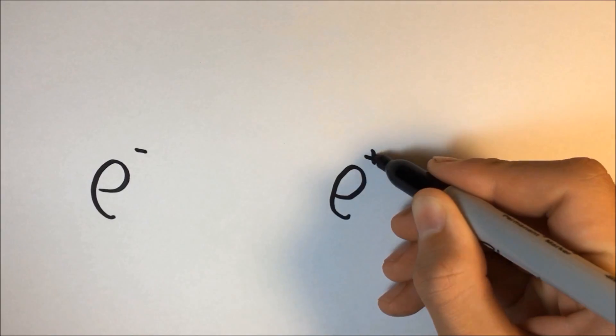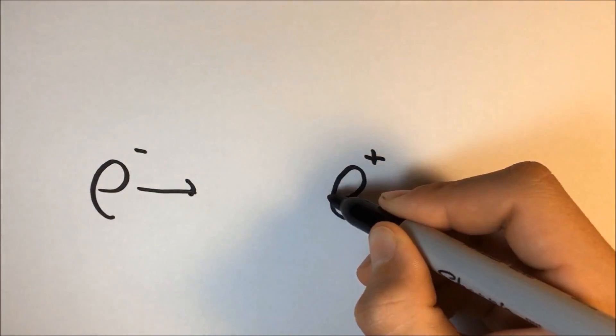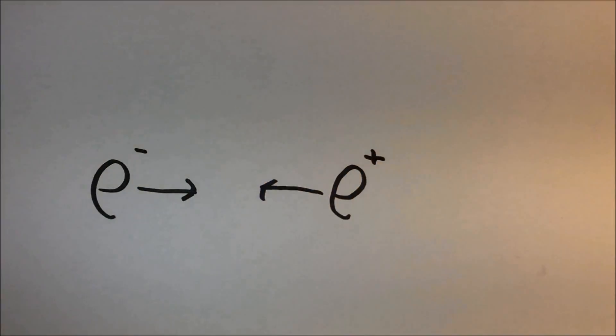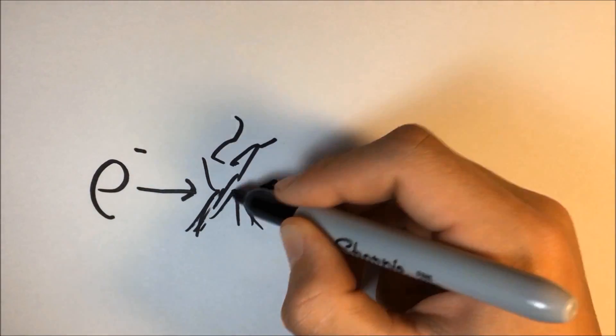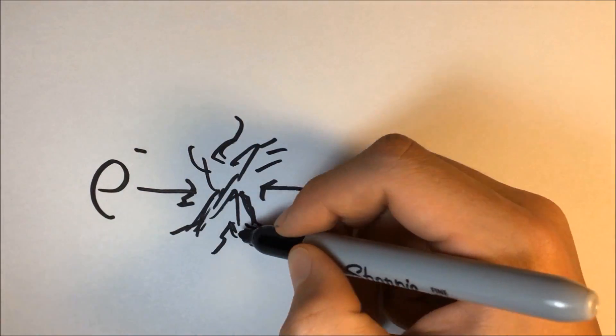For example, an electron and a positron. Normally when two particles are created, they instantly annihilate back into energy. This means that normally particles can't escape the black hole.